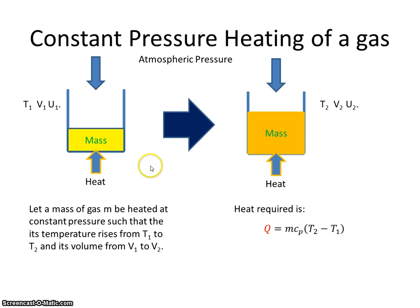Therefore, the heat required to heat the gas from this state to that state is from the specific heat capacity, M, specific heat capacity of gas at constant pressure times T2 minus T1.